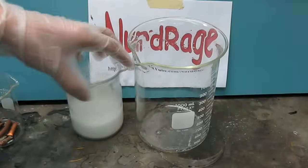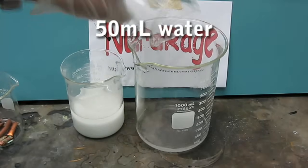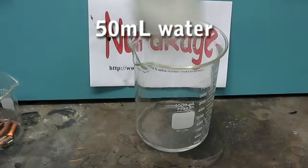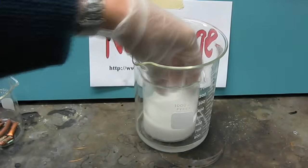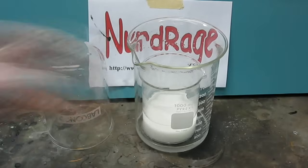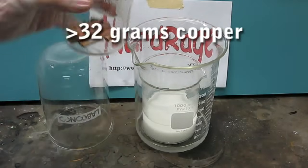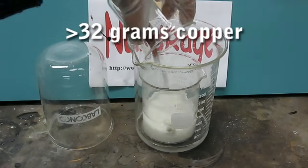Give it a few minutes to settle and in this larger container place 50 milliliters of water. Now place the acid mixture inside the larger container like this. Now get at least 32 grams of copper, an excess is better, and pour it into the acid mixture.